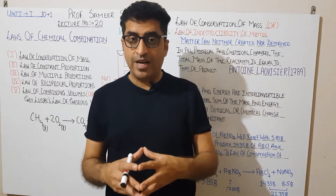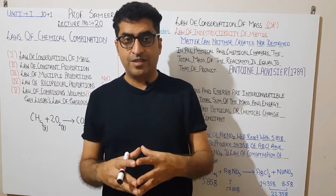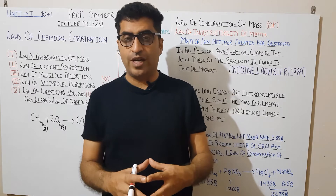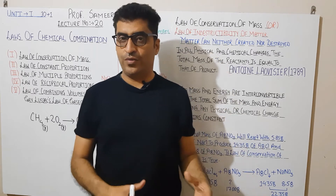The combustion of methane: CH4 (gas) + 2O2 (gas) → CO2 (gas) + 2H2O (liquid). This balanced chemical equation shows the reactants on the left and the products on the right.